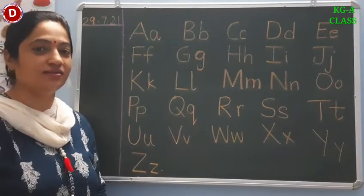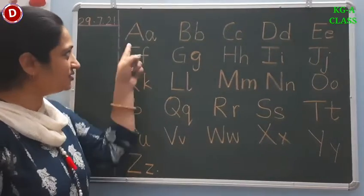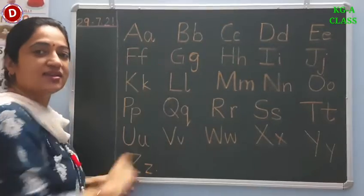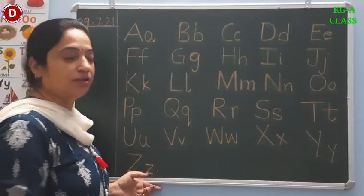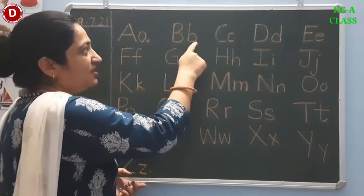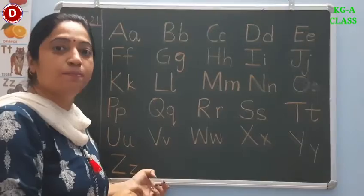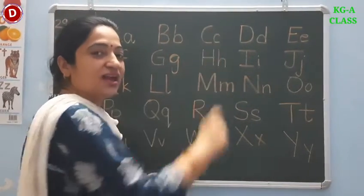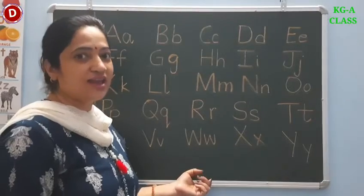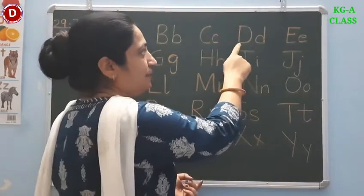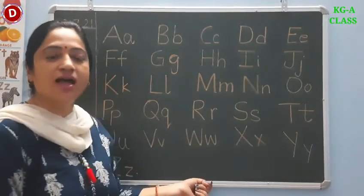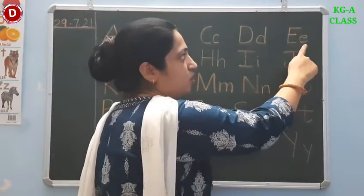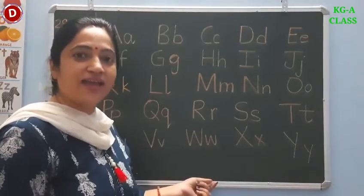Children, now let's learn the phonics sounds of the letters A to Z. Look here. This is capital A, small A. A says 'a' as in apple. This is capital B, small B. B says 'b' as in ball. Children, this is capital C and this is small C. C says 'c' as in cat. This is capital D, small D. D says 'duh' as in dog. Children, this is capital E and this is small E. E says 'e' as in egg.